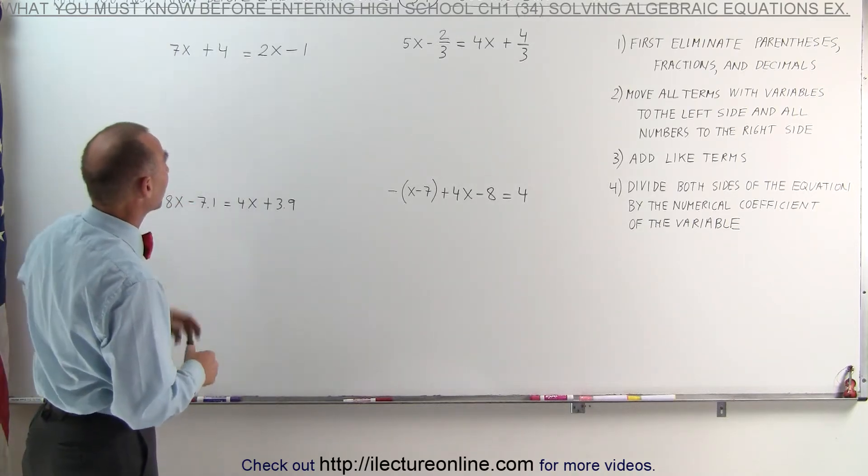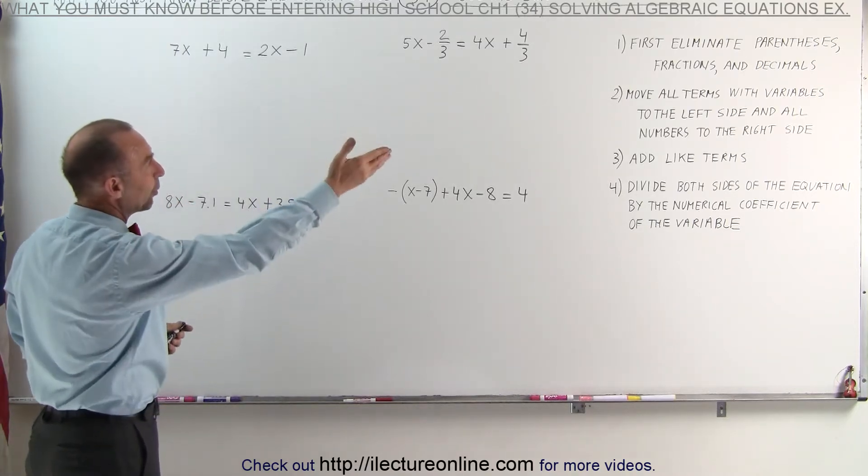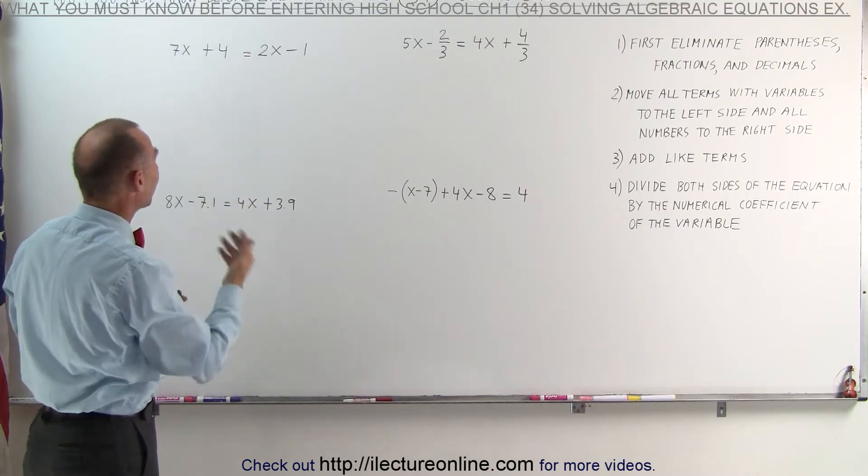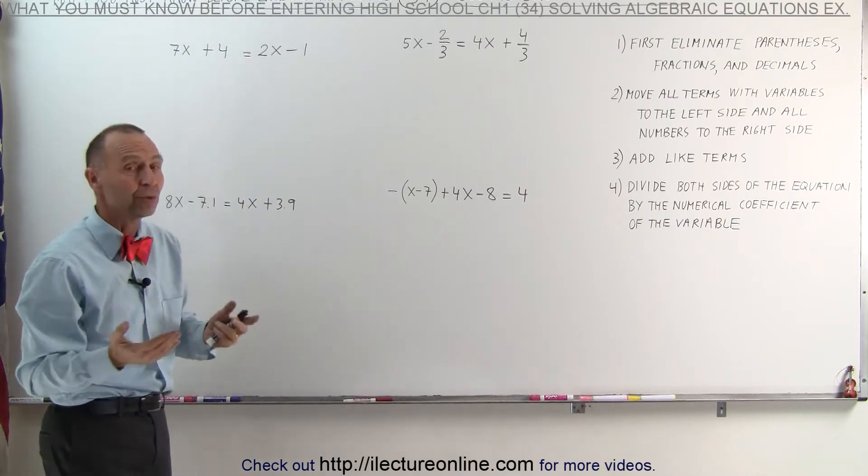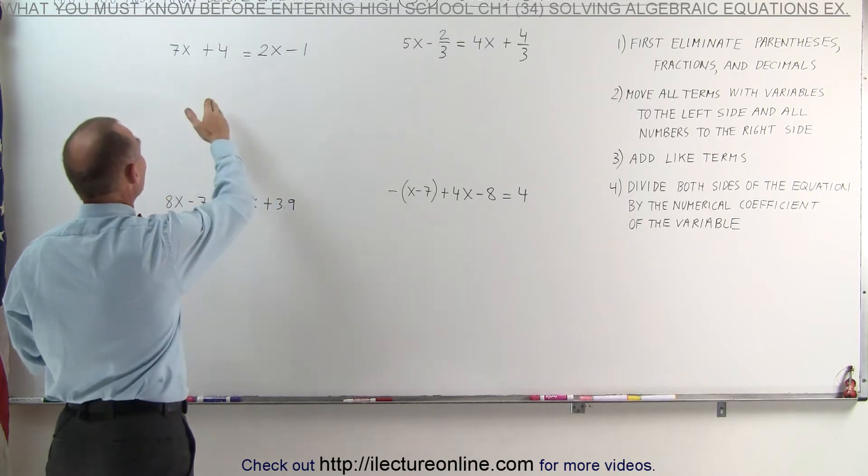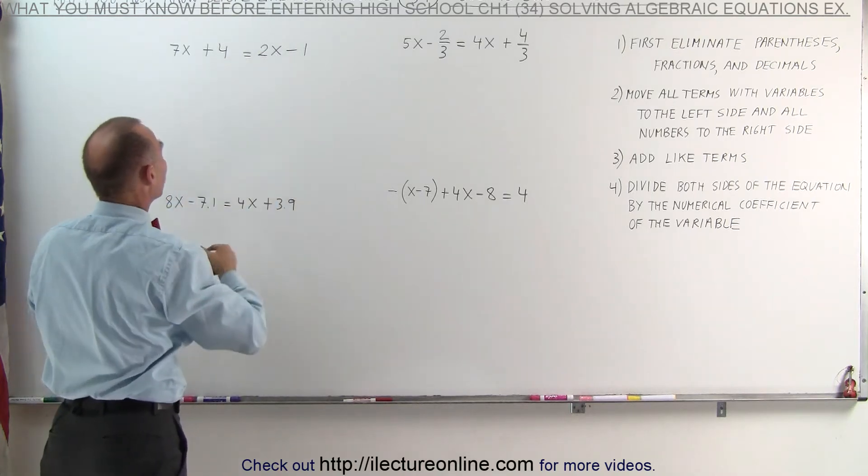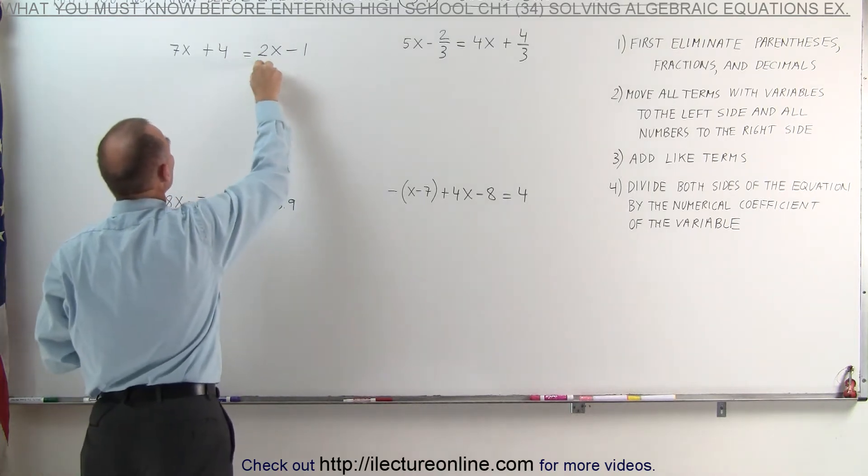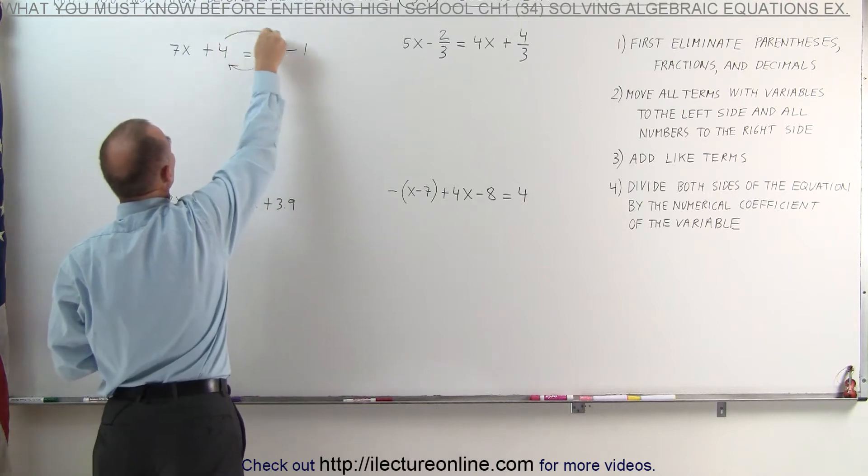Starting with the first one, this is straightforward. Here we don't have to do step number one. There's no fractions, parentheses, or decimals. We simply start with step two. We move all the terms with the variable to the left side of the equation and all the numbers to the right side, which means the 2x will move to the left and the 4 will move to the right.